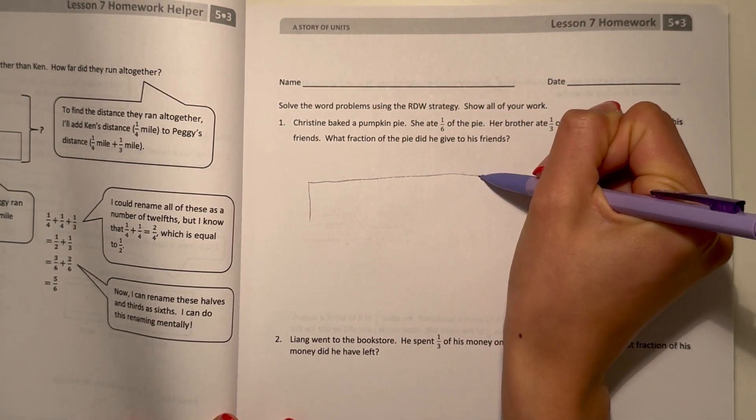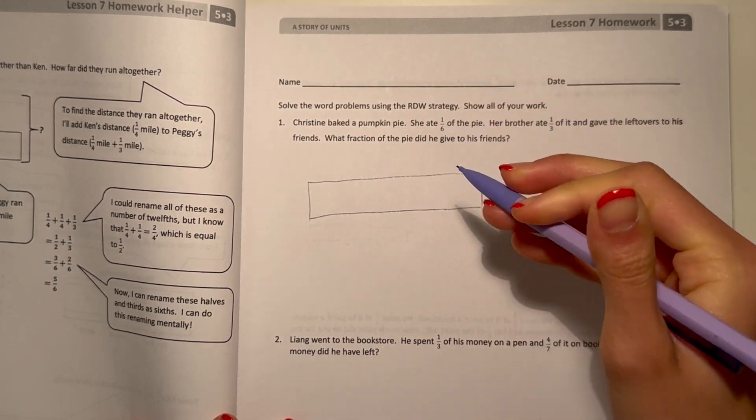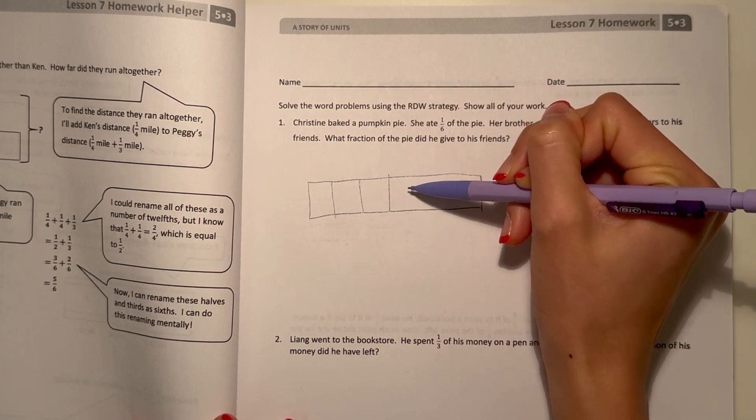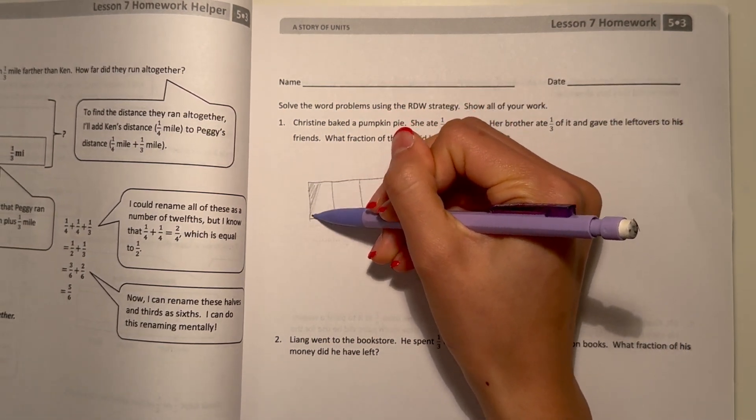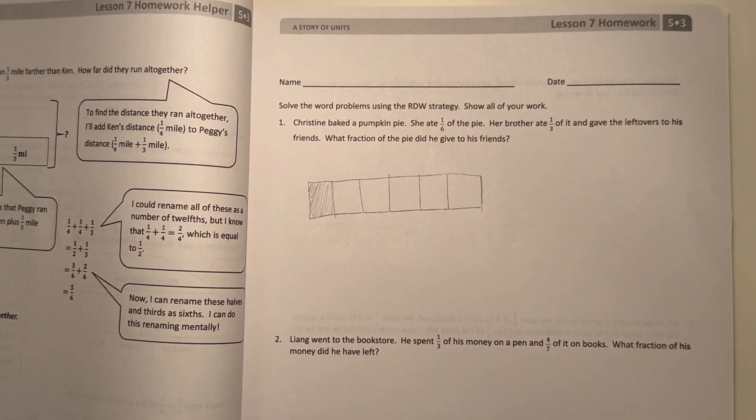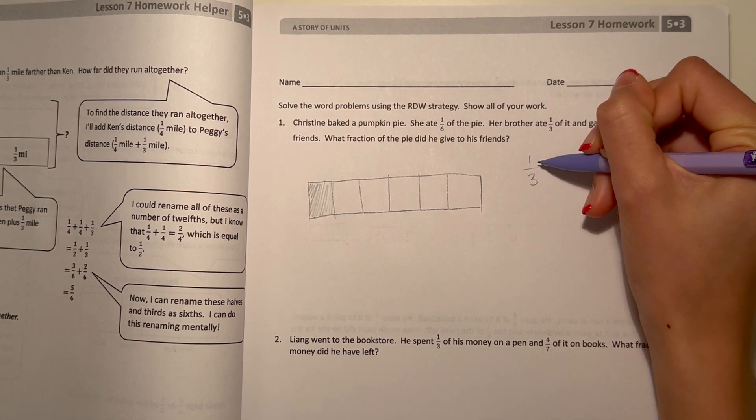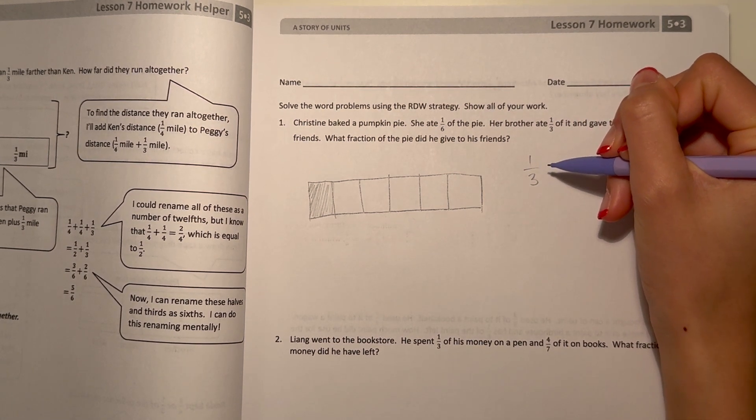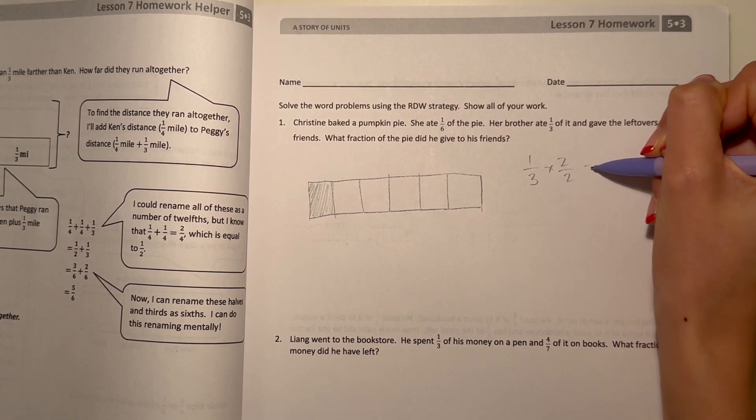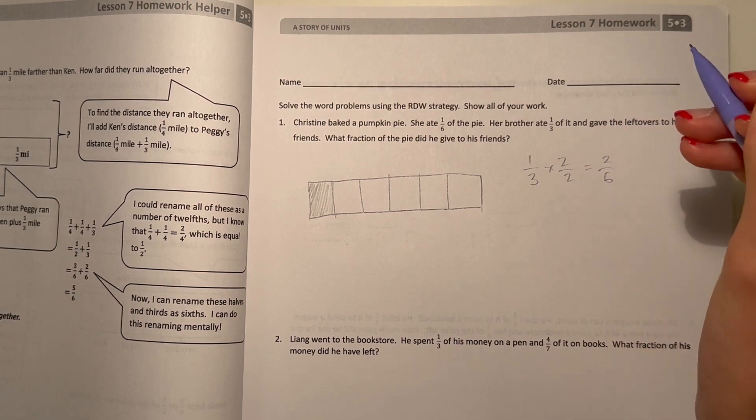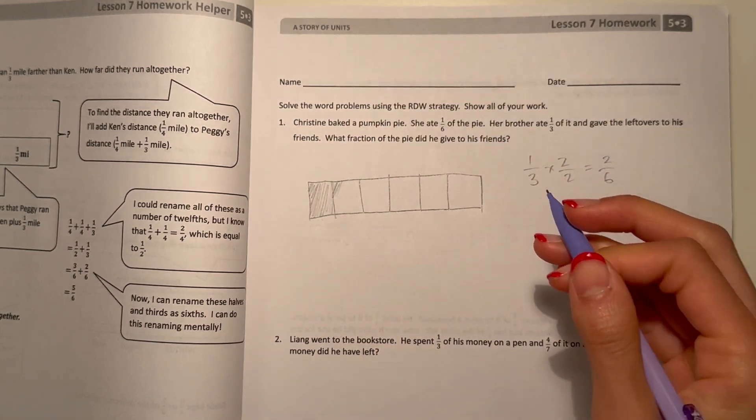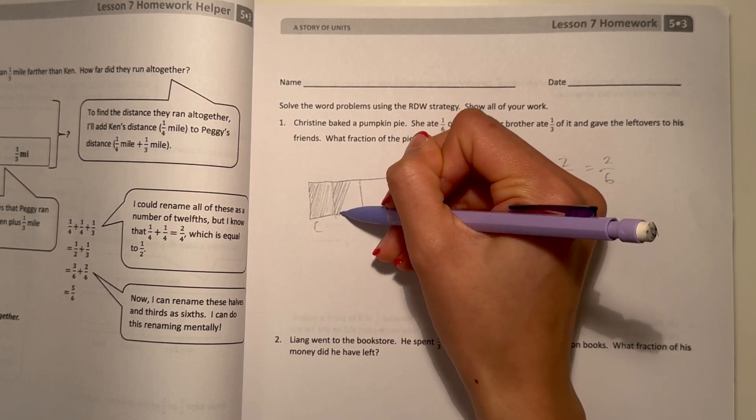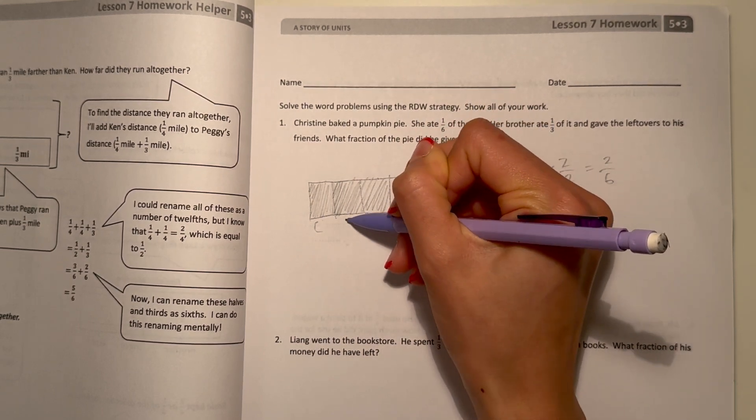Let's draw our tape diagram. We're going to split this into six. One-sixth of the pie was eaten by Christine. But her brother ate one-third. So, one-third and one-sixth. We're going to convert this into six. So, three times two is six. So, we multiply this whole thing by two, which gives us two-sixths. That means her brother ate two-sixths of the pie. So, here down low, we can label C for Christine and two over here for her brother.